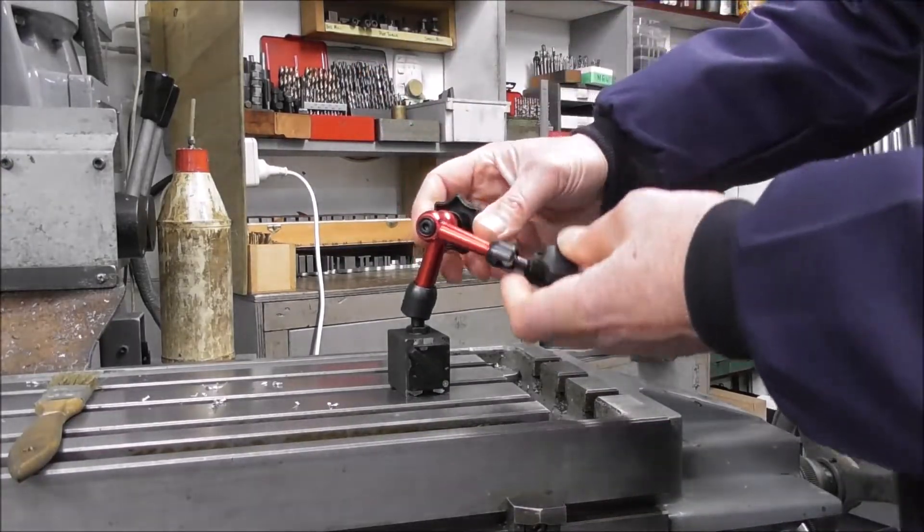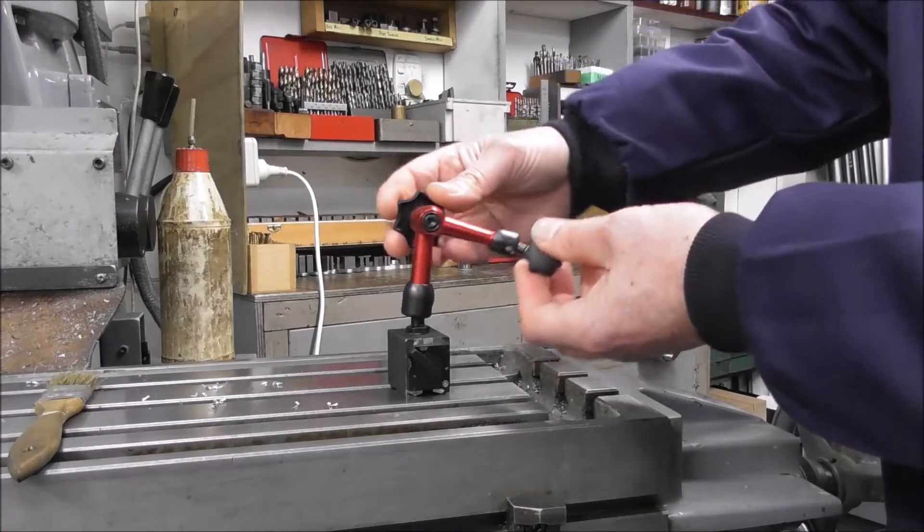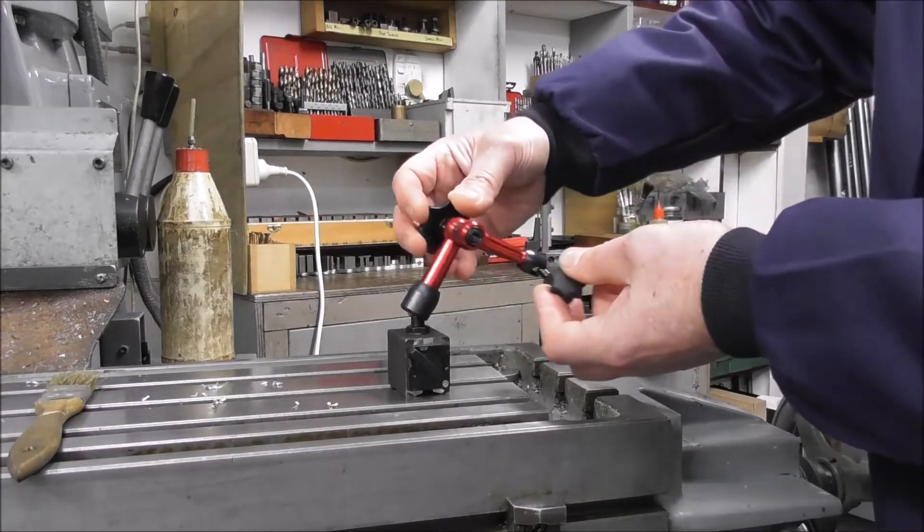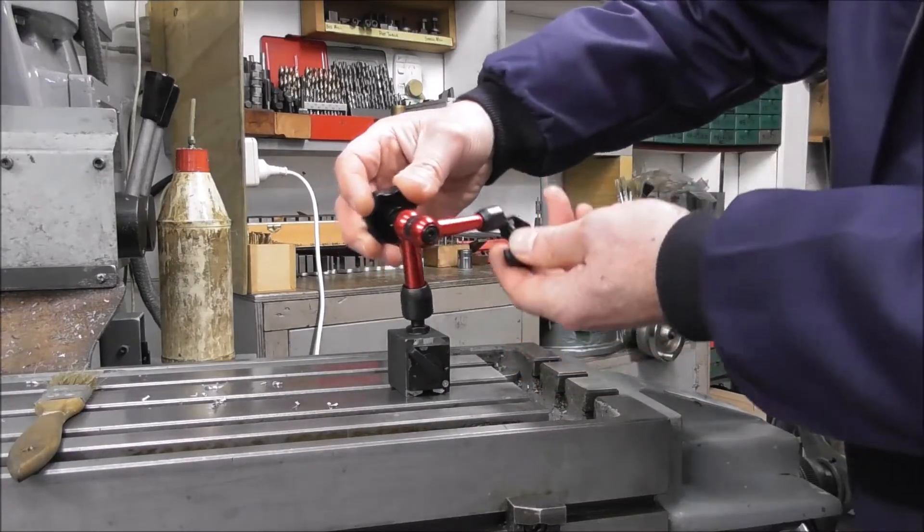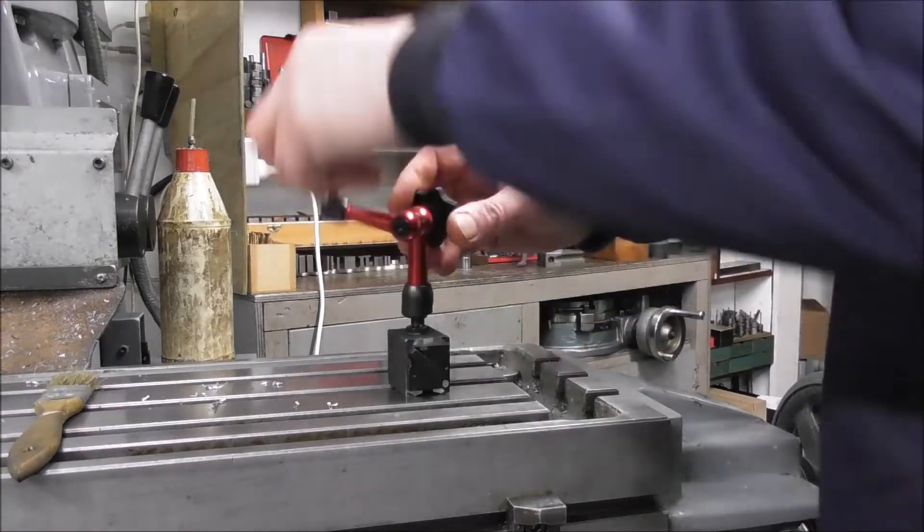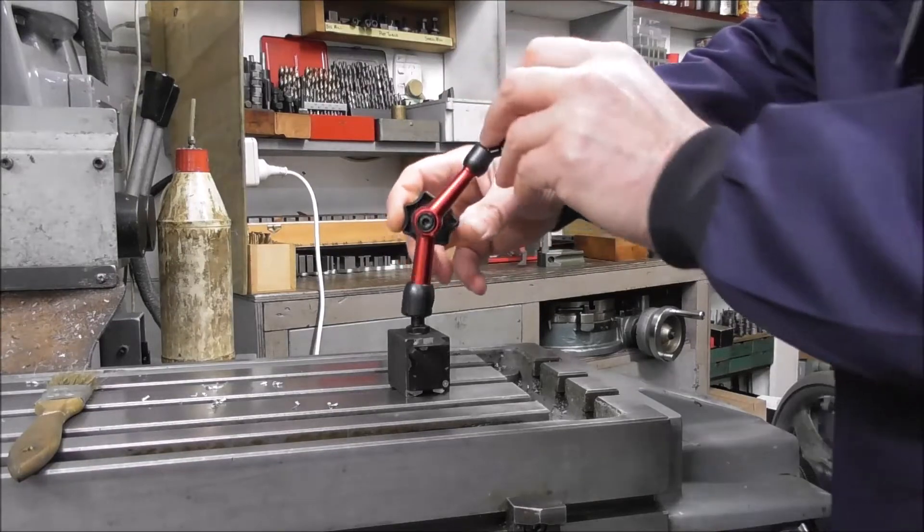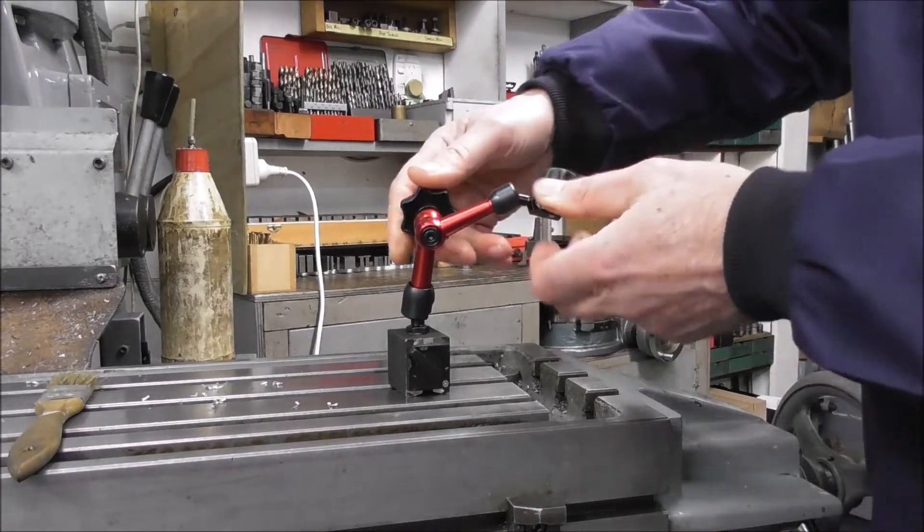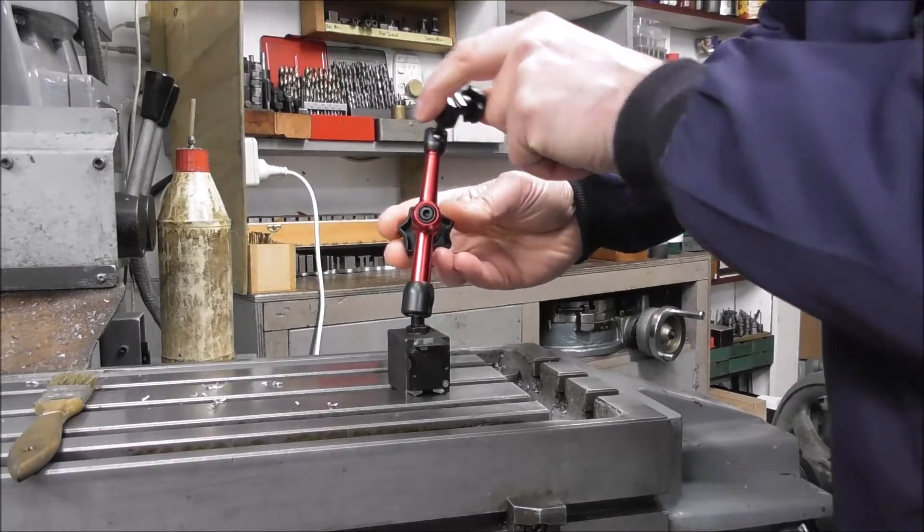If you're not familiar with this type of dial indicator stand, you must get one. They're just fantastic and a big step up from the earlier designs that had multiple clamp screws. This has one clamp screw and it locks really solidly in any orientation. You can position your dial indicator in a few seconds and it's rock solid. It's a very good design. I think it was Noga's invention.